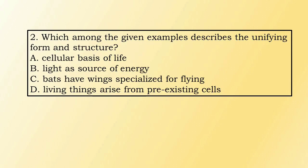Number 2. Which among the given examples describes the unifying form and structure? A. Cellular basis of life. B. Light as a source of energy. C. Bats have wings specialized for flying. D. Living things arise from pre-existing cells.